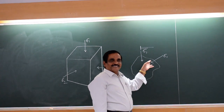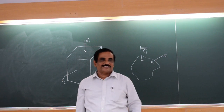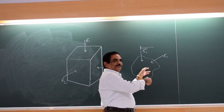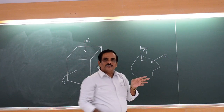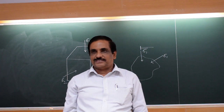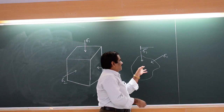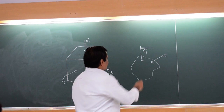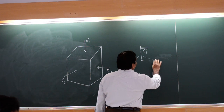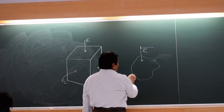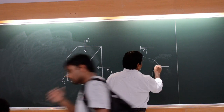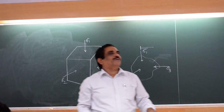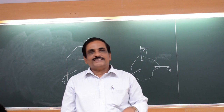Perpendicular to sigma 1, there are two more perpendicular directions. If sigma 1 is like this, one will be like this and another will be like this — two principal directions, two perpendicular directions. Sigma 2 will be this way, or sigma 3 will be this way. Whatever stress you apply, that is your sigma 1. The other two perpendicular directions are sigma 2 and sigma 3.